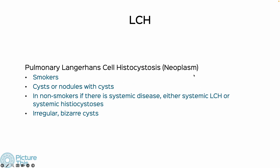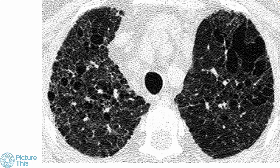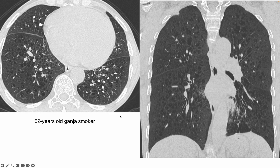PLCH is a neoplasm, more common in smokers. You get cysts or nodules with cysts. In non-smokers, you can get cystic disease if there is systemic LCH or Erdheim-Chester disease. The cysts are usually bizarre — well-defined walls but very irregular. Sometimes you can mistake this for emphysema, but in emphysema you will not get walls. This 52-year-old cannabis smoker had cysts with walls randomly distributed throughout the lung parenchyma, typical of PLCH.